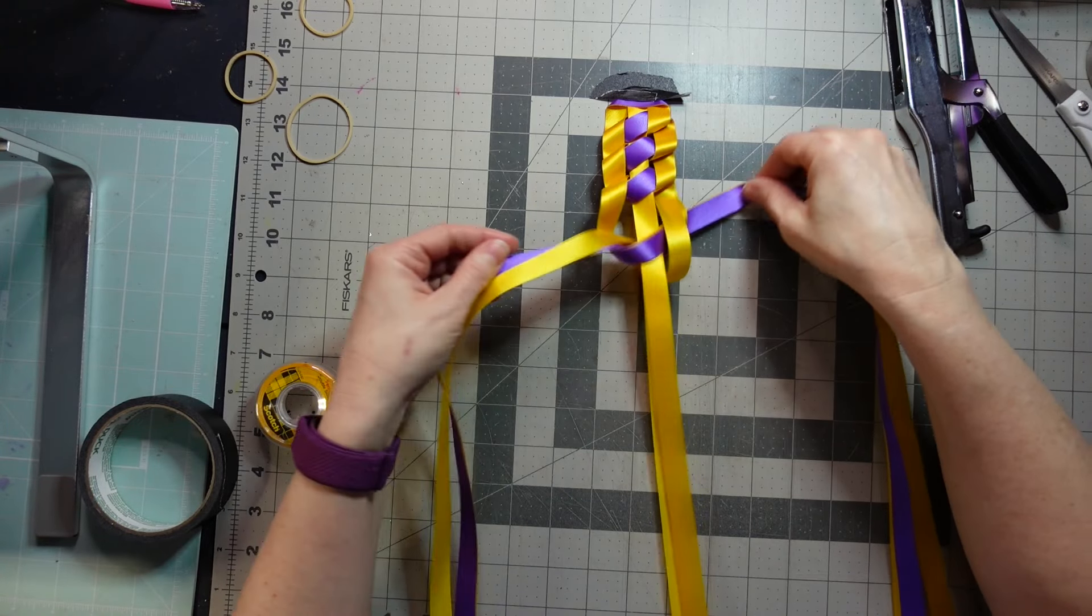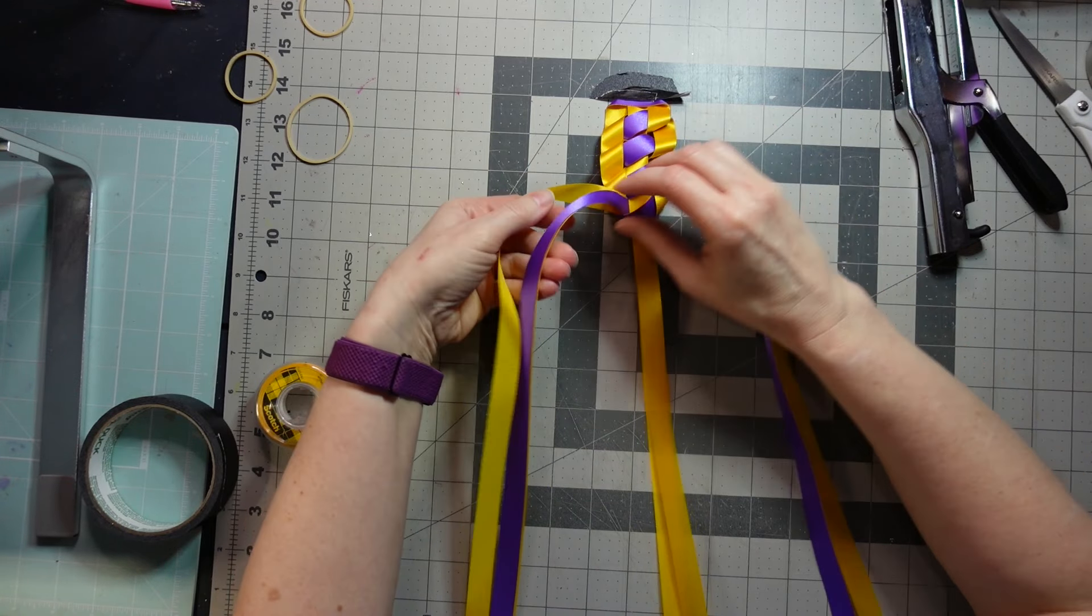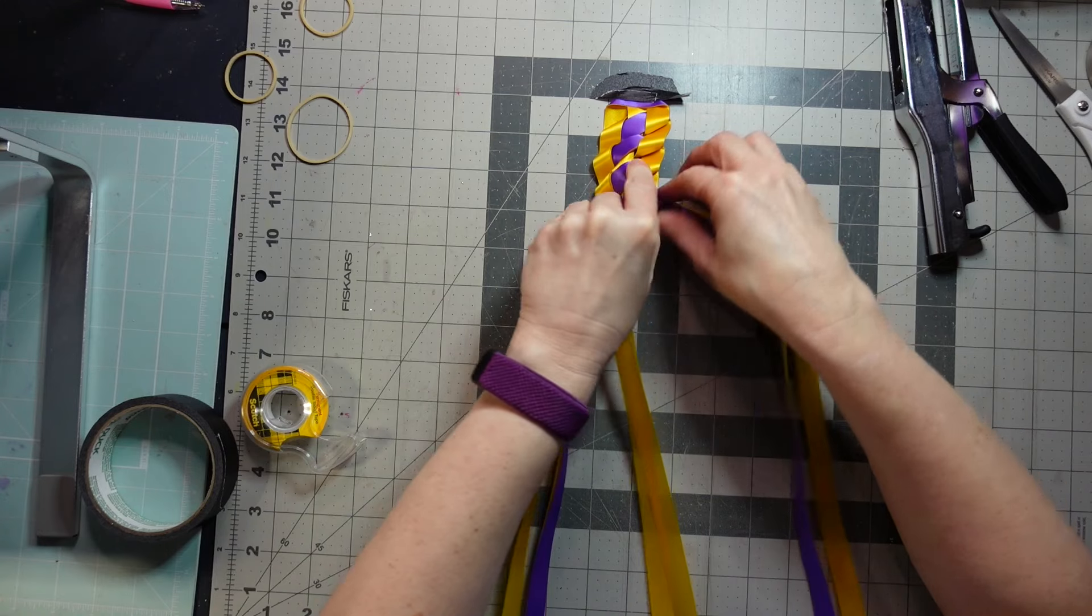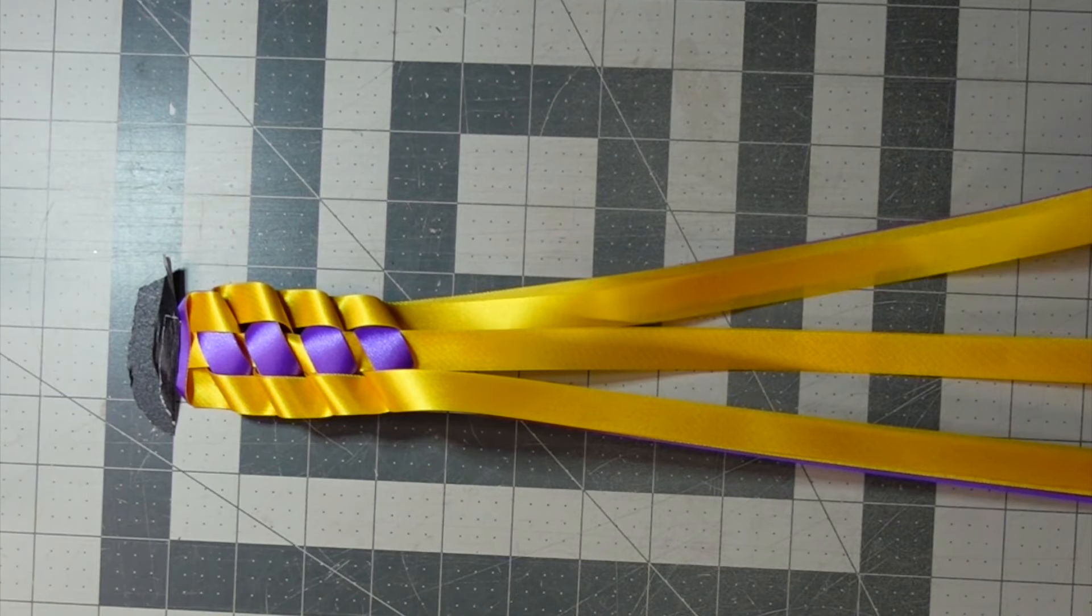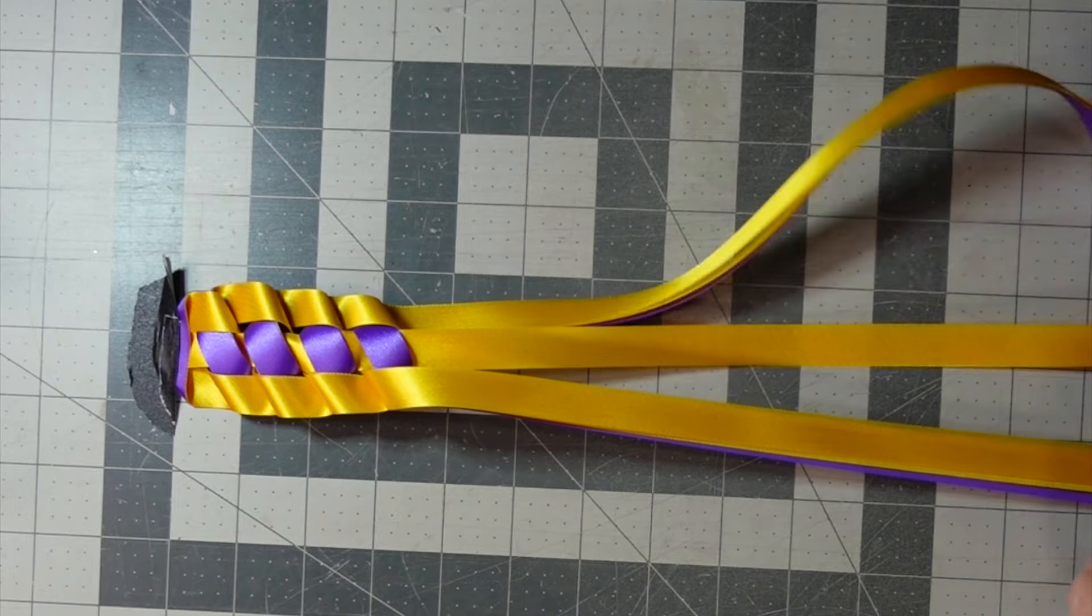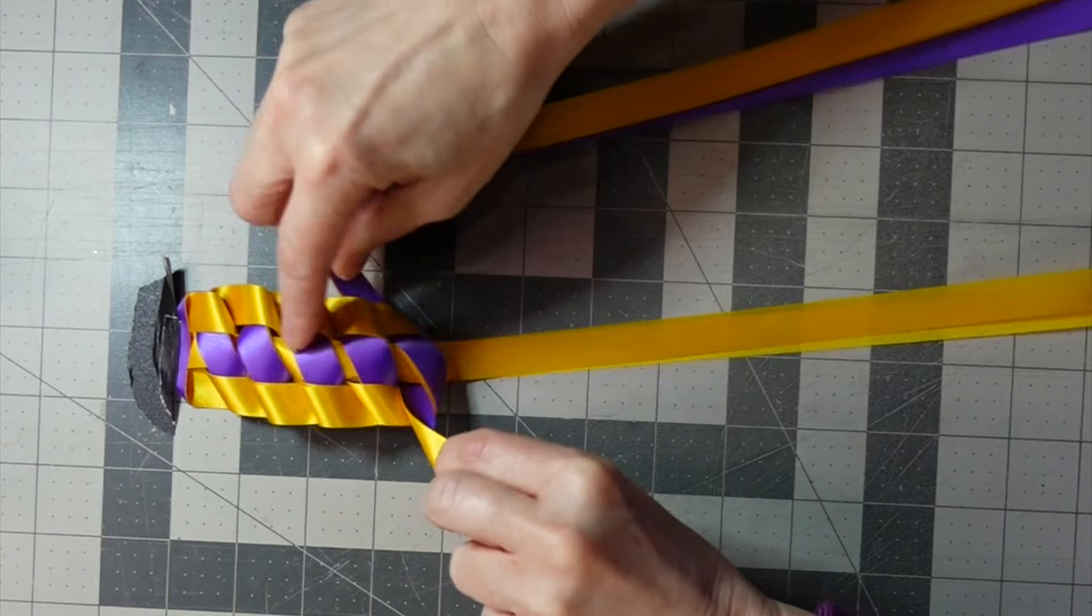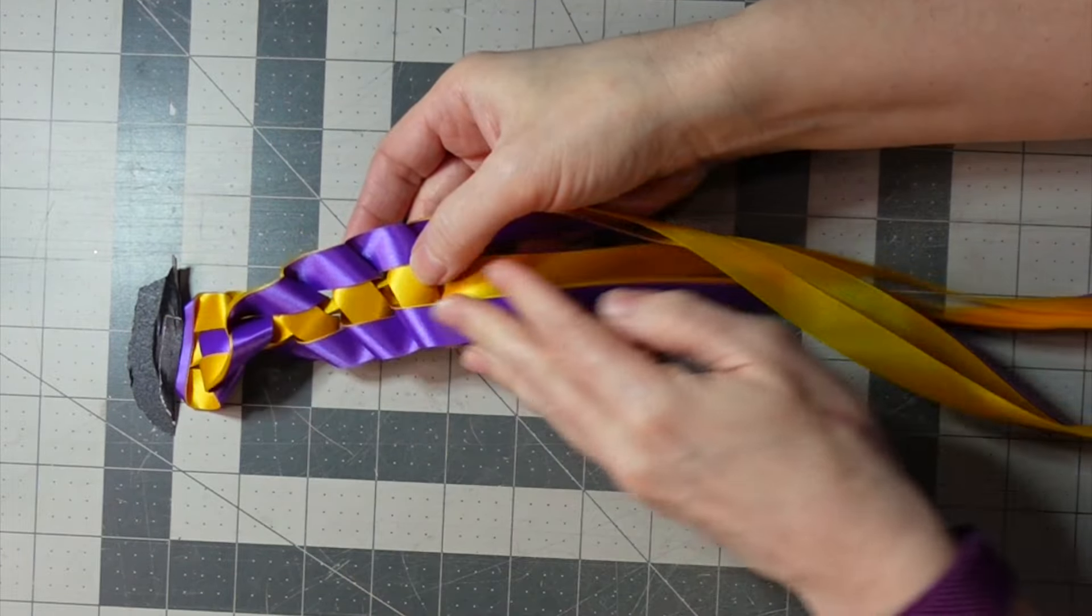You could also do this in one solid color. It's just really up to you. But do not do like a diamond dust down the middle for the middle ribbons. Because you see under the purple, you can barely see that. So if you do diamond dust down the center middle ribbon, you're not going to hardly see it. It's going to be a waste.